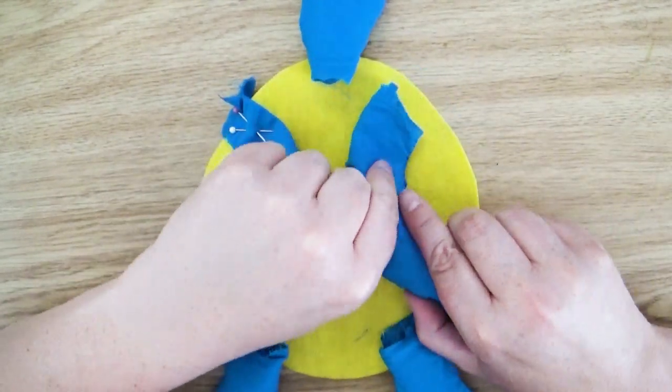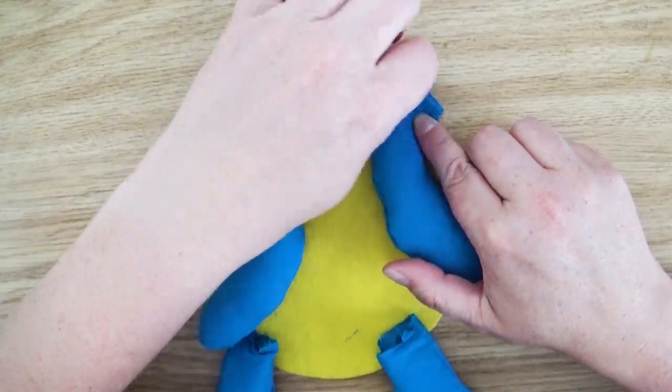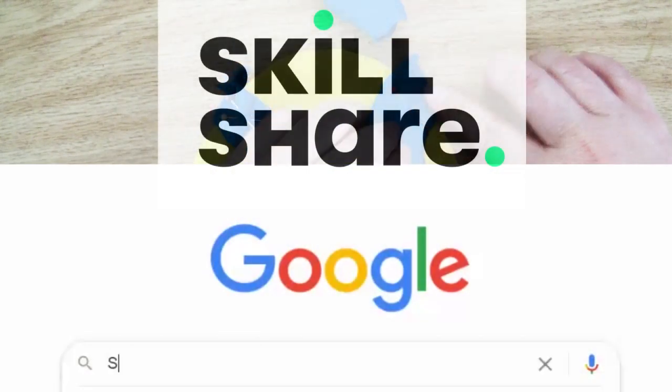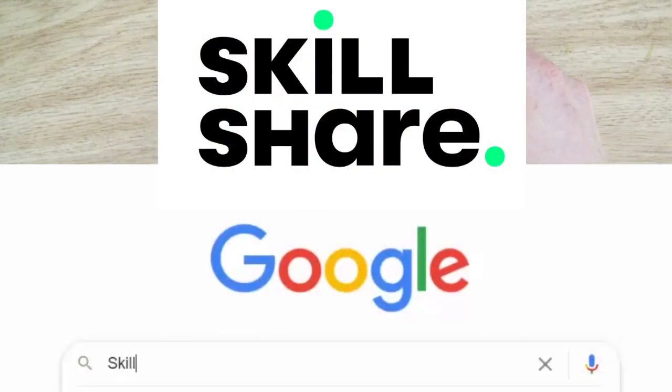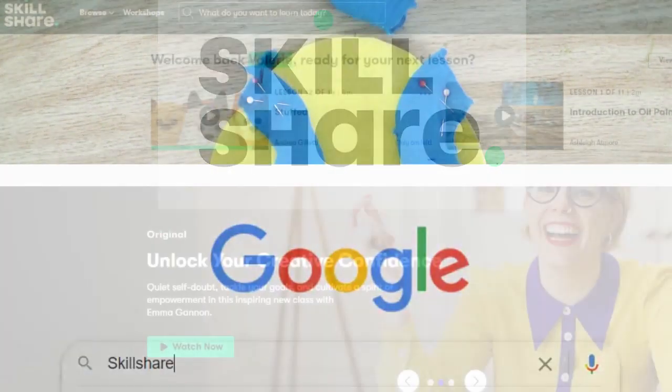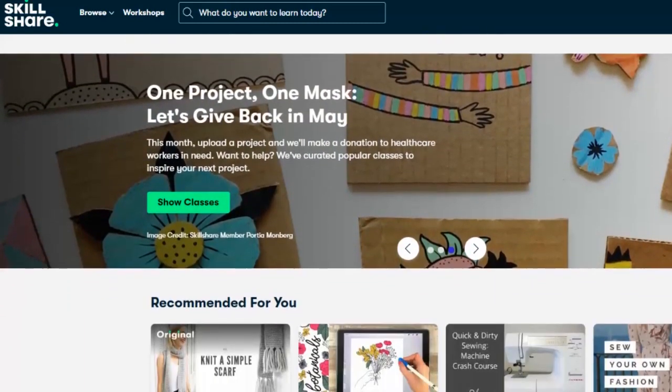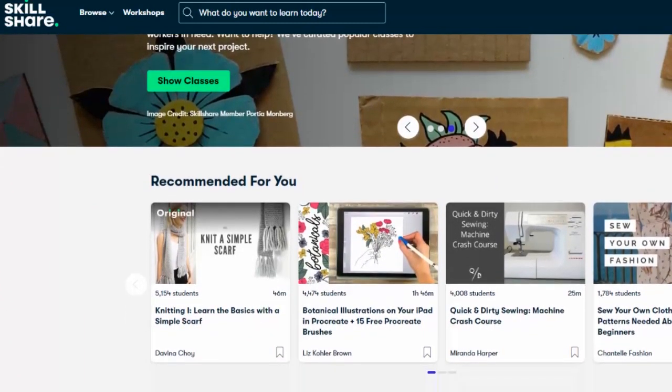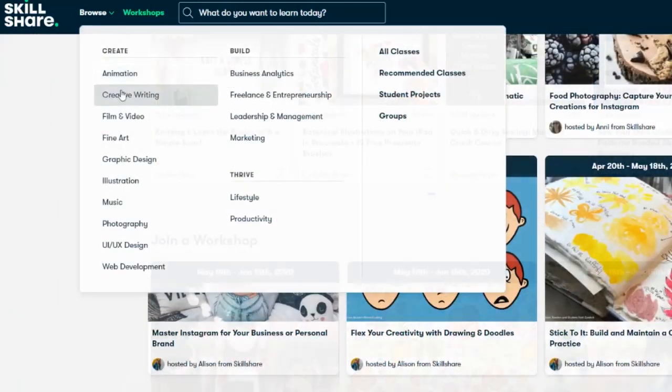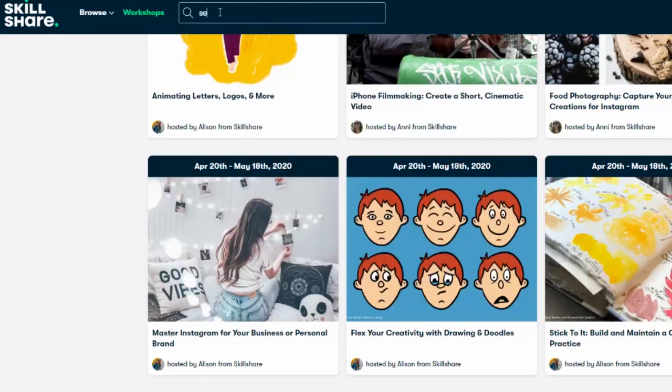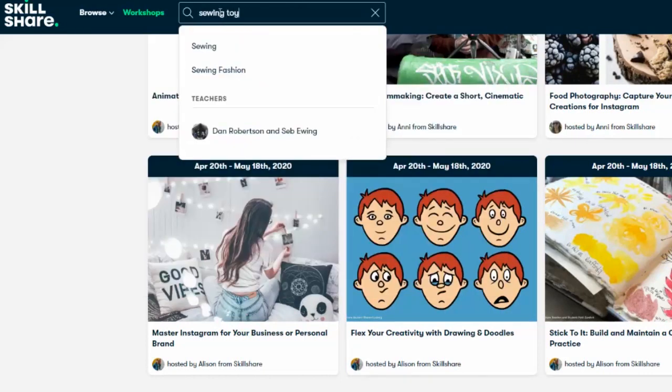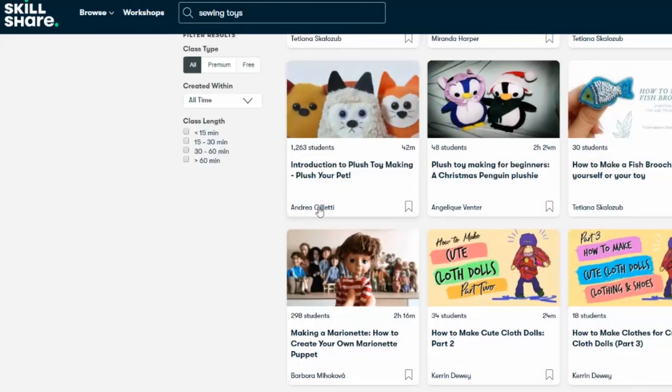So whenever I come across an art or crafty thing that I am unsure of, I'll jump over to Skillshare to see if they have a video talking about that. I have an annual membership to Skillshare, which gives me access to any of their classes. You can find classes on so many different topics from illustrations and graphic designs, watercolor, oil painting. I jumped on there to see if there were some classes on sewing plushies and I was surprised at how many I found.